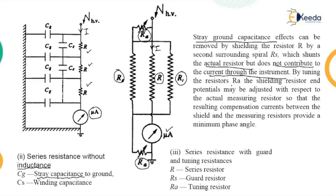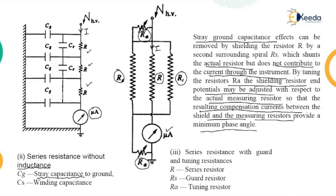By tuning the resistor RA, the shielding resistor potentials may be adjusted with respect to the actual measuring resistor, so that the resulting compensation currents between the shield and the measuring resistors provide the minimum phase angle. This is the circuitry used for measurement of current. The problem of residual inductance and capacitance seen in the impedance ammeter connection can be reduced partially using these circuits.